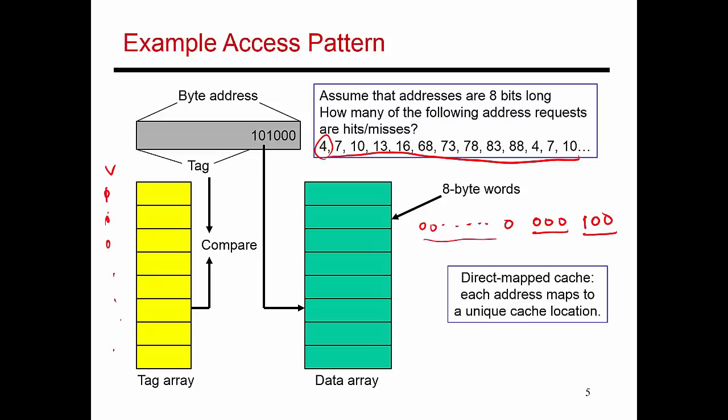Over time, the valid bits turn to 1s. But let's ignore the valid bits for now. It's safe to say that since I've never seen this address before, it's going to be a cache miss. And so now I go to memory, fetch that byte of data, fetch the neighboring 8 bytes of data as well.